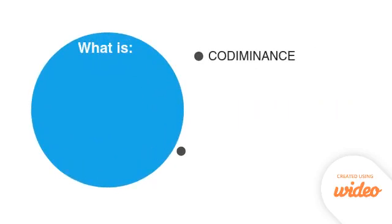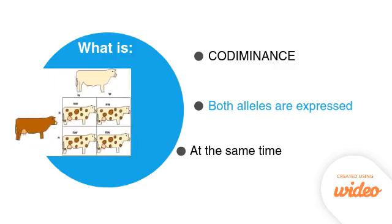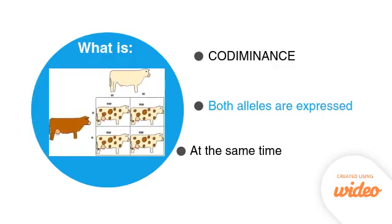Next, we have codominance. Codominance occurs when both alleles are expressed at the same time, and none of the alleles are dominant over the other — they're both equally expressed. We can see that the offspring in the picture expresses both the brown and the white color. There is no mixing. If we were looking at incomplete dominance, the offspring would probably have been a light brown cow because the white and the brown would mix.